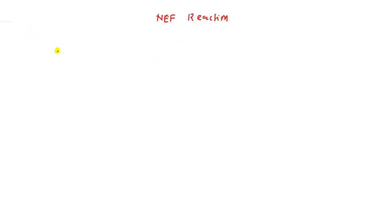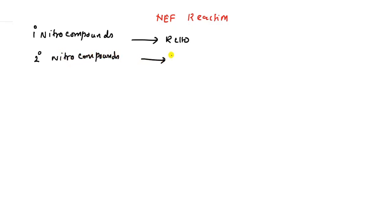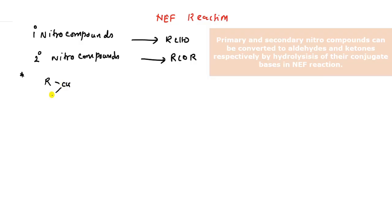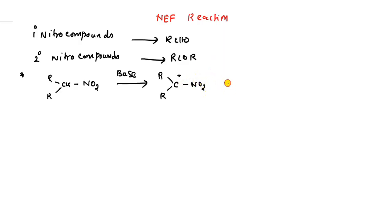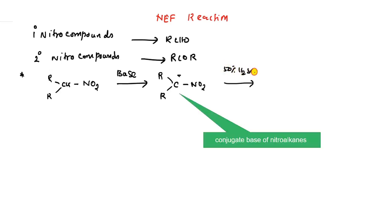In the NEF reaction, primary and secondary aliphatic nitro compounds can be converted into aldehydes and ketones. In the standard procedure, the nitronate salt is obtained by treating with base. The nitronate salt is then treated with 50% sulfuric acid and undergoes hydrolysis to give the ketone.